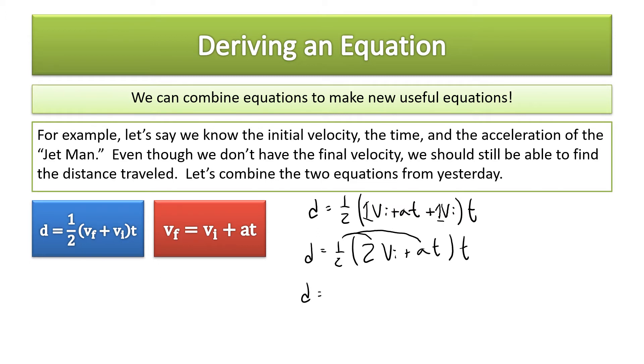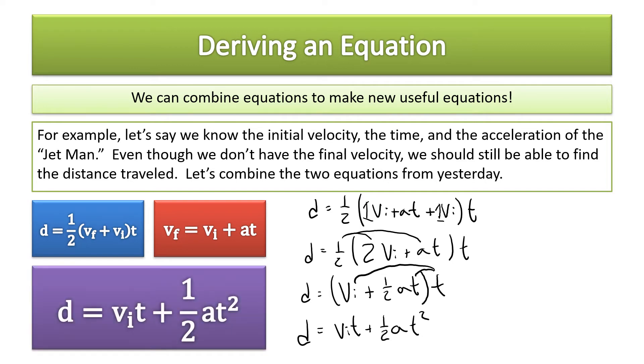So d equals one (what's one half of two? Well it's just one) times vi plus one half times a times t, and that's still in parentheses being multiplied by t. So now we have to distribute t. Then we have vi times t plus one half times a times t times t—t times t is t squared. And that is the formula we're gonna use today: d equals vi t plus one half a t squared.